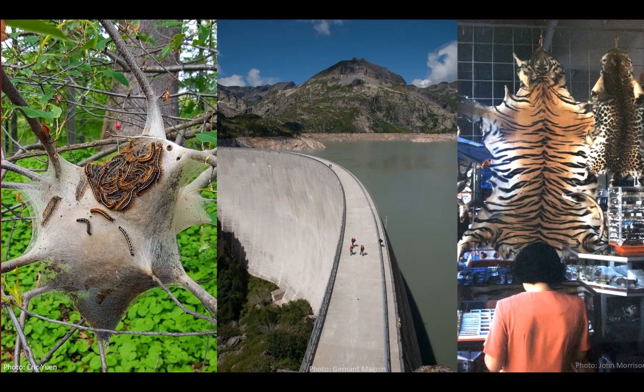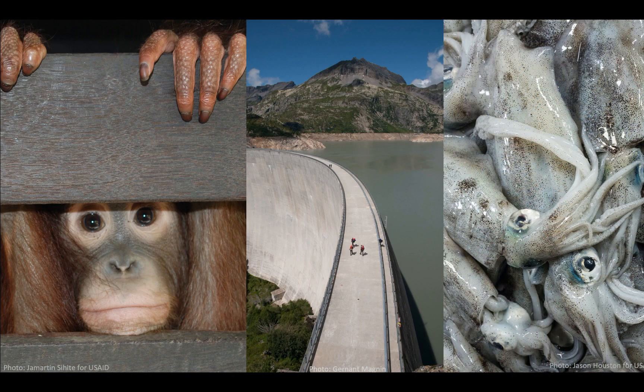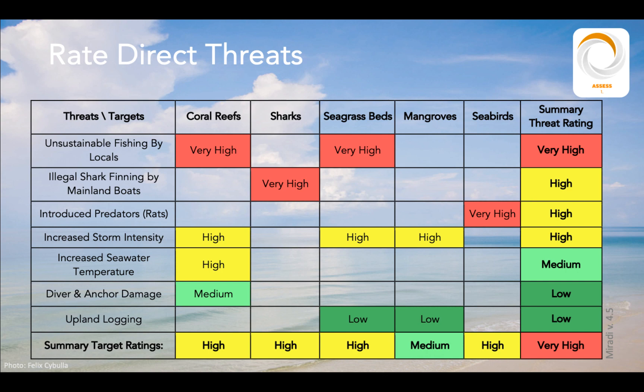Other examples include unsustainably planned dams and water diversions, wild animal trade, and unsustainable harvests. Because we typically do not have the resources to address all of the threats that affect our species and ecosystems, we use a threat rating exercise to identify those threats that are having the greatest impact on our targets and are the most urgent to address. The threat rating table shown here is part of the Eastern Bay Marine Project example that comes as an auto-download with Miradi.